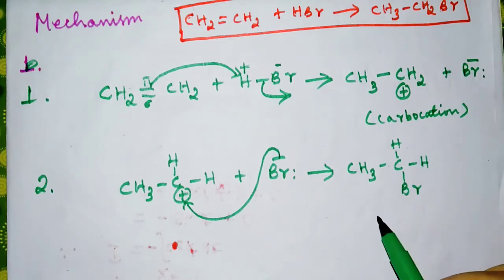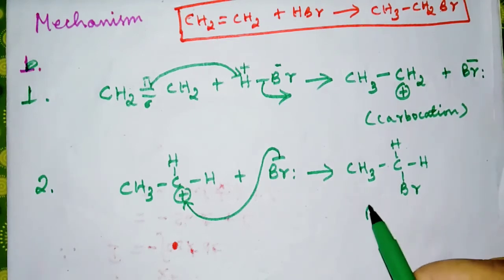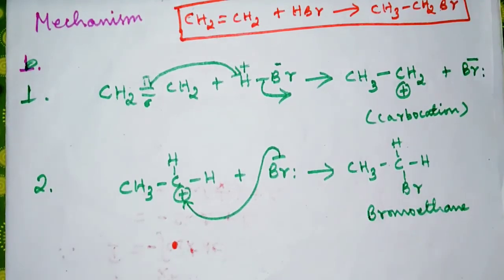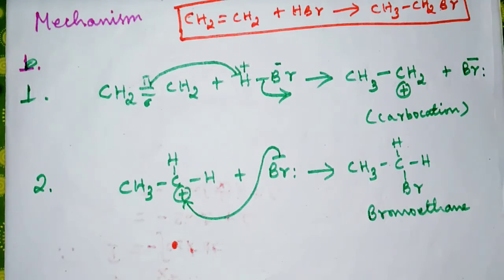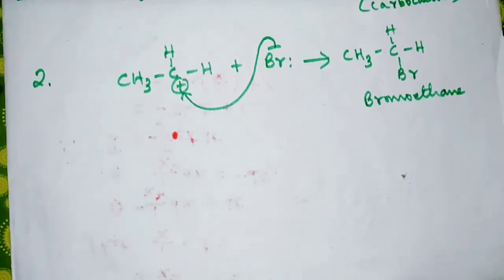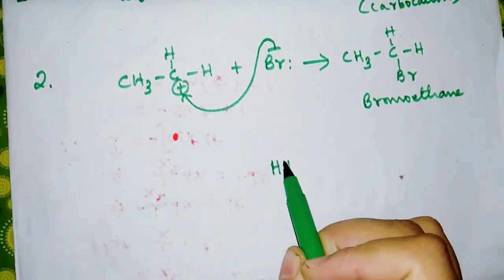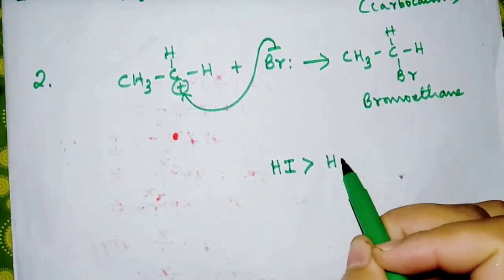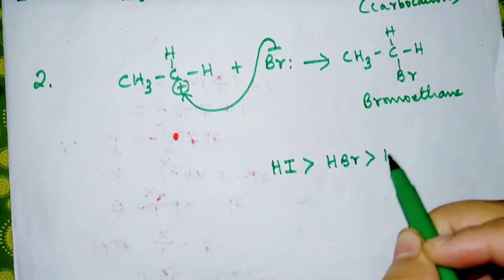In today's video I have explained to you the reaction of symmetrical alkenes with hydrogen halides. I forgot to tell you one thing: the order of reactivity of hydrogen halides is like this—hydrogen iodide is more reactive than hydrogen bromide, than hydrogen chloride, than hydrogen fluoride.